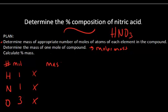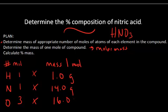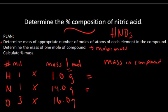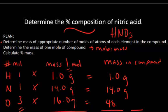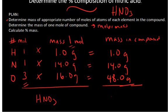The mass of one mole of a given element — just get that off the periodic table. Hydrogen is 1 gram per mole, nitrogen is 14 grams per mole, and oxygen is 16 grams per mole. The mass of each element in the compound is the number of moles times the mass per one mole. So hydrogen contributes 1 gram, nitrogen contributes 14 grams, and oxygen — since there are three — is 3 × 16 = 48 grams. The total is 63 grams, so the molar mass of HNO3 is 63 grams per mole.